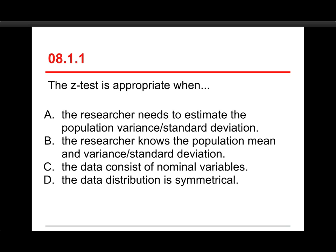The first question on this quiz is: the z-test is appropriate when the researcher knows the population mean and variance or standard deviation. The answer to this one is b. To do the z-test, the researcher needs to know the population mean and the variance or standard deviation.